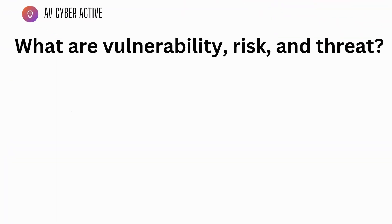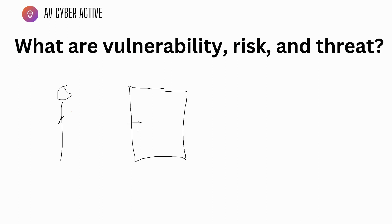The first question is: what are vulnerability, risk, and threat? I'll try to explain this with the help of an example. Suppose we have a door protected by a lock. You also have a bad actor — a person standing right outside the door looking at it, trying to find out how to get inside. This person is your threat, who's trying to get inside the door, and behind the door you have your valuables, important files, and confidential documents.